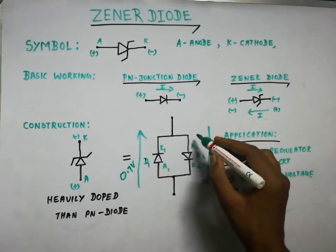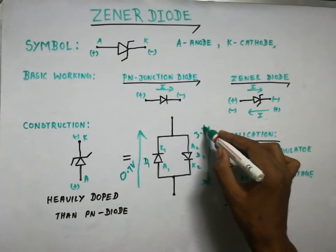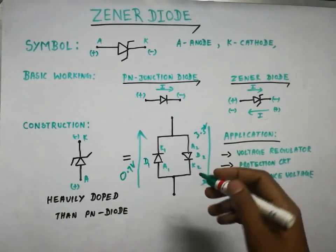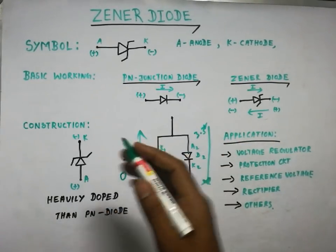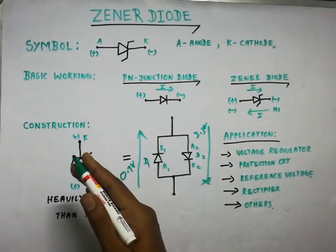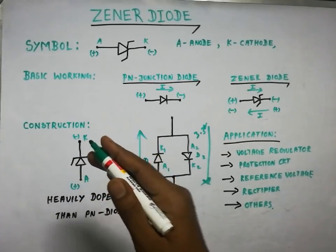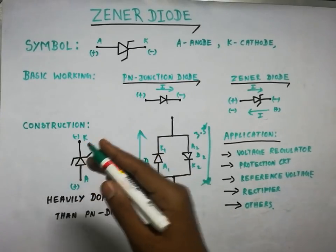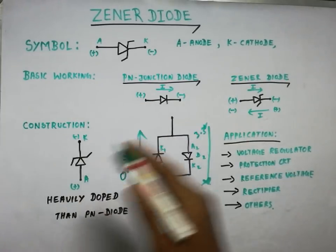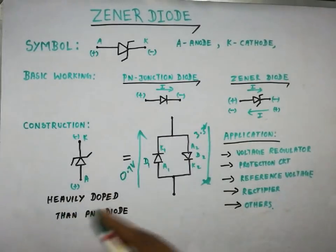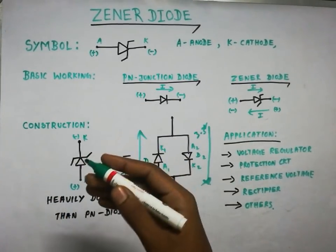The Zener diode has a breakdown voltage — for example 3.3 volts on the reverse side. There are various varieties of Zener diodes available: 3.3V, 5.1V, 9.1V, and 12.1V breakdown voltages. These are the standard varieties of Zener diode.